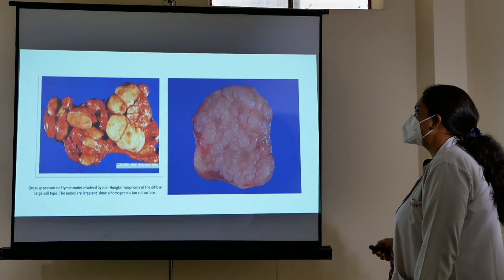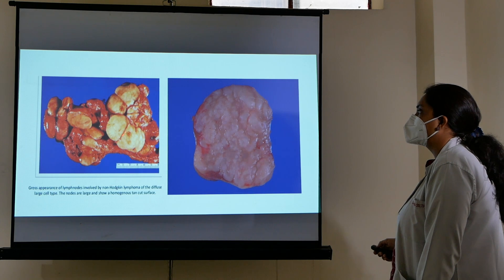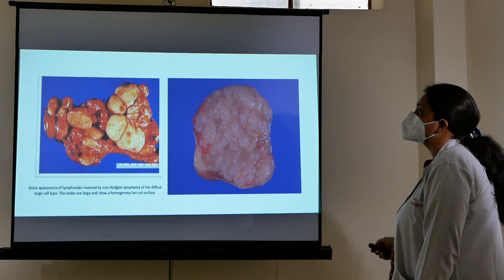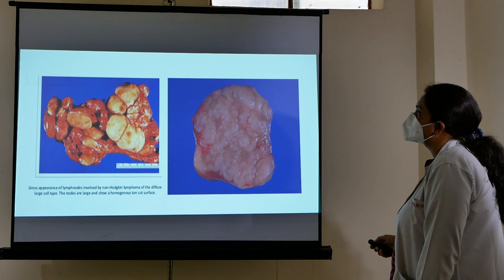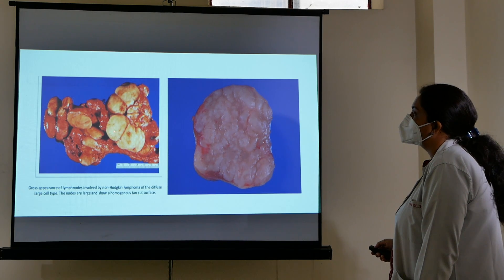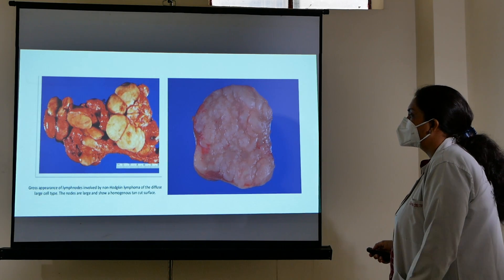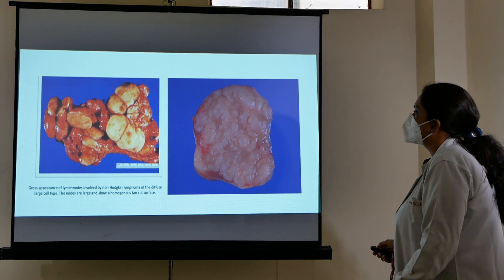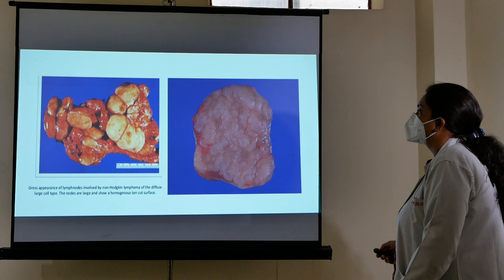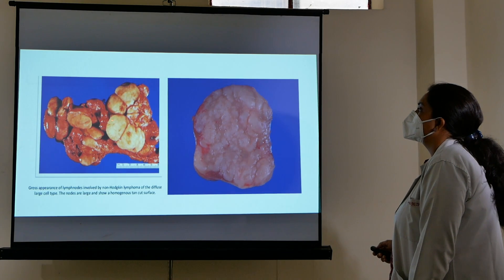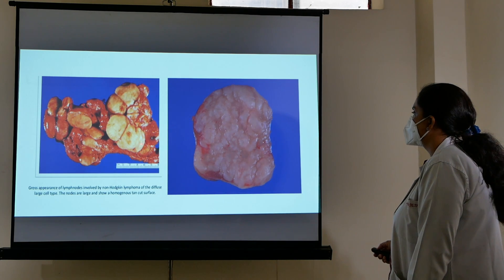This is the gross picture: you can see multiple lymph nodes that are adherent to each other, large in size, with a homogeneous gray-white cut surface. Grossly, if large lymph nodes are adherent to each other with a homogeneous cut surface, you will identify them as lymphomas. Microscopy will further classify the specific type.